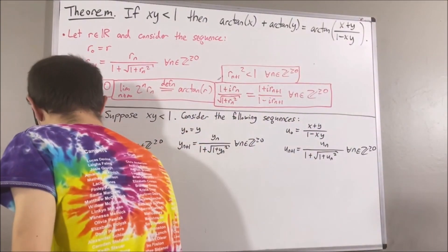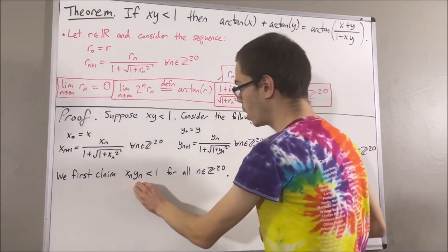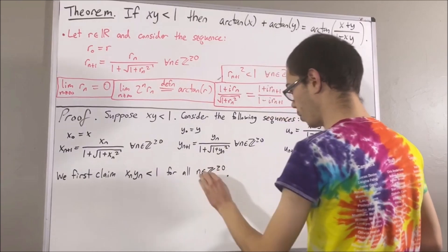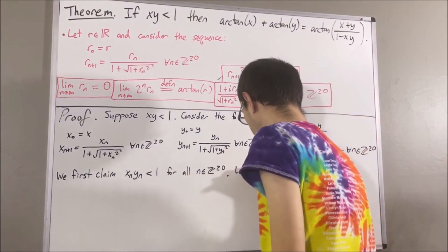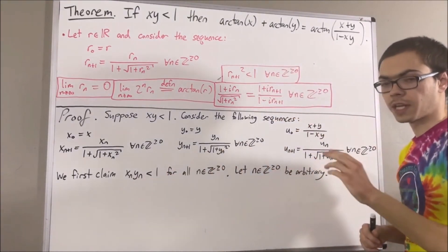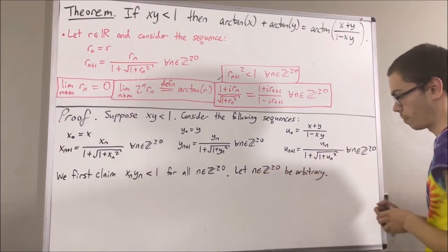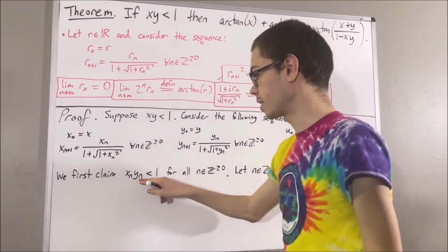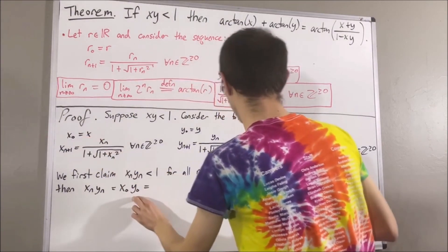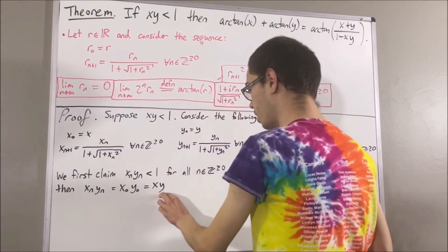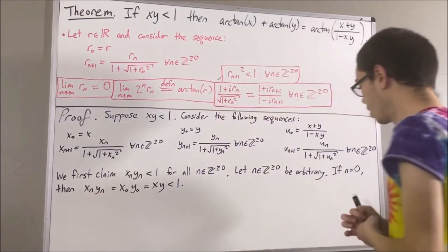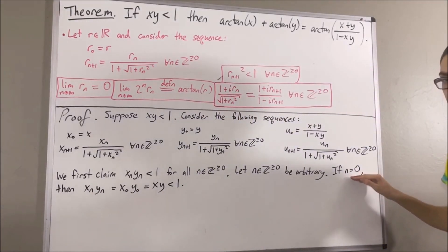We claim that xn times yn is less than 1 for all n greater than or equal to 0. We don't need induction to prove this, so we give ourselves an arbitrary integer n greater than or equal to 0 and prove that xn times yn is less than 1 in two cases. First, let's consider the case n equals 0. If n equals 0, then xn times yn is equal to x0 times y0. By definition, x0 is x and y0 is y, so we have x times y, and by assumption this is less than 1. So this completes the case n equals 0; now let's suppose that n is positive.